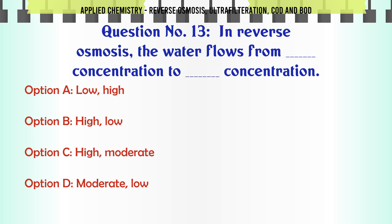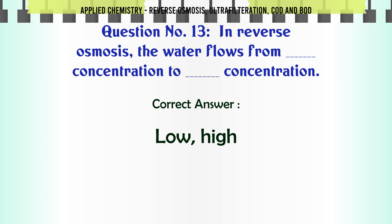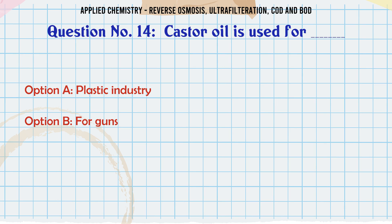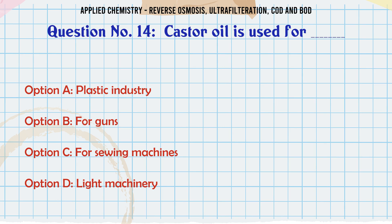In reverse osmosis, the water flows from concentration to concentration: a) low to high, b) high to low, c) high to moderate, d) moderate to low. The correct answer is low to high. Castor oil is used for: a) plastic industry, b) for guns, c) for sewing machines, d) light machinery.